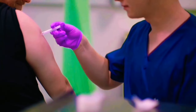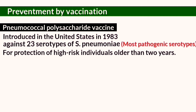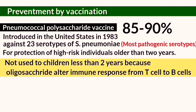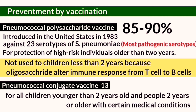There is also a vaccine for Strept pneumoniae infections called the pneumococcal polysaccharide vaccine, introduced in 1983, which is effective against 23 of the most widespread pathogenic serotypes. It is given to children older than two years and has shown 85 to 90 percent reliability and effectiveness. However, this vaccine is not prescribed to children younger than two years, as the oligosaccharide would alter the immune response from T cells directly to B cells. Children younger than two years are therefore given the pneumococcal conjugate vaccine, which is effective against 13 of the most pathogenic serotypes that infect newborns.